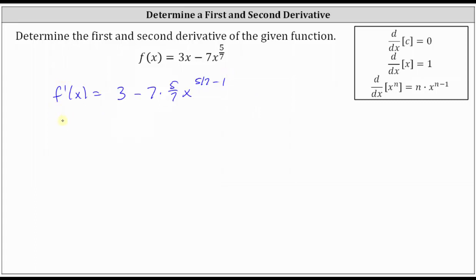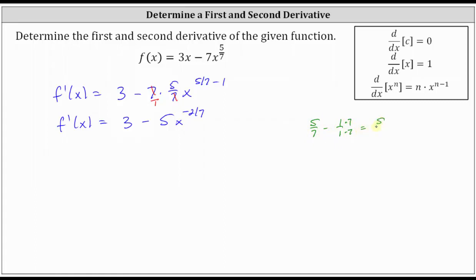Let's go ahead and simplify. f prime of x is equal to three minus — multiplying here, notice how the sevens simplify to one — which gives us five x to the power of five-sevenths minus one. Five-sevenths minus one is equivalent to five-sevenths minus seven-sevenths, which is equal to negative two-sevenths.